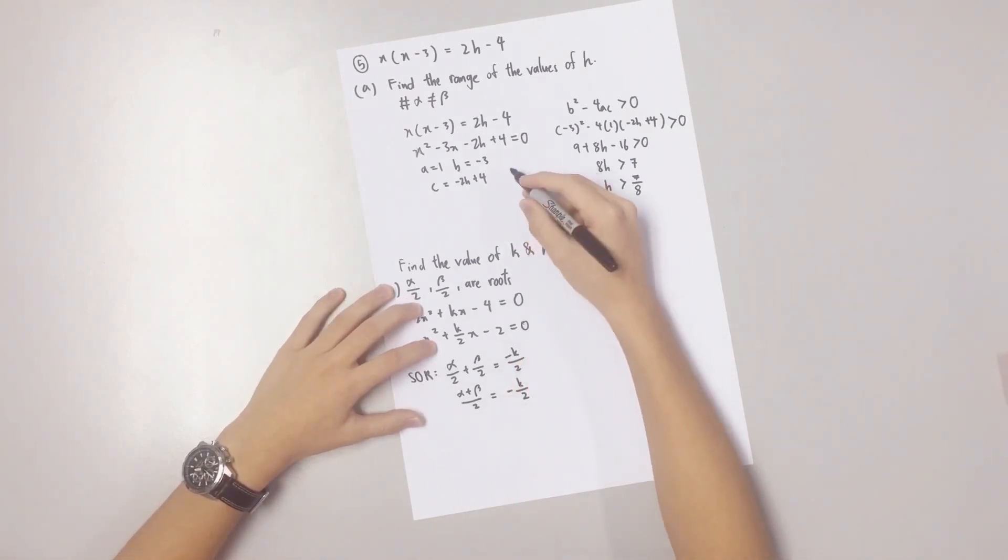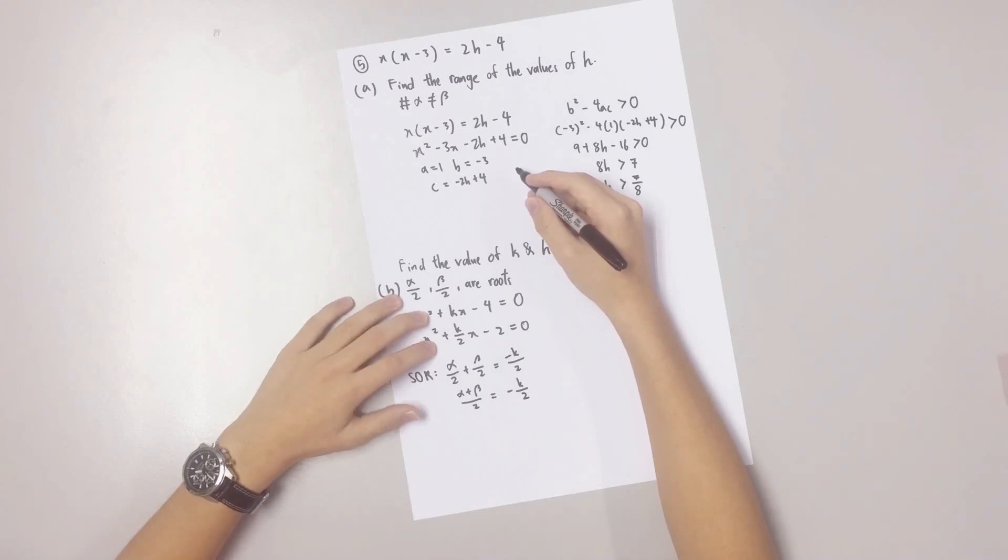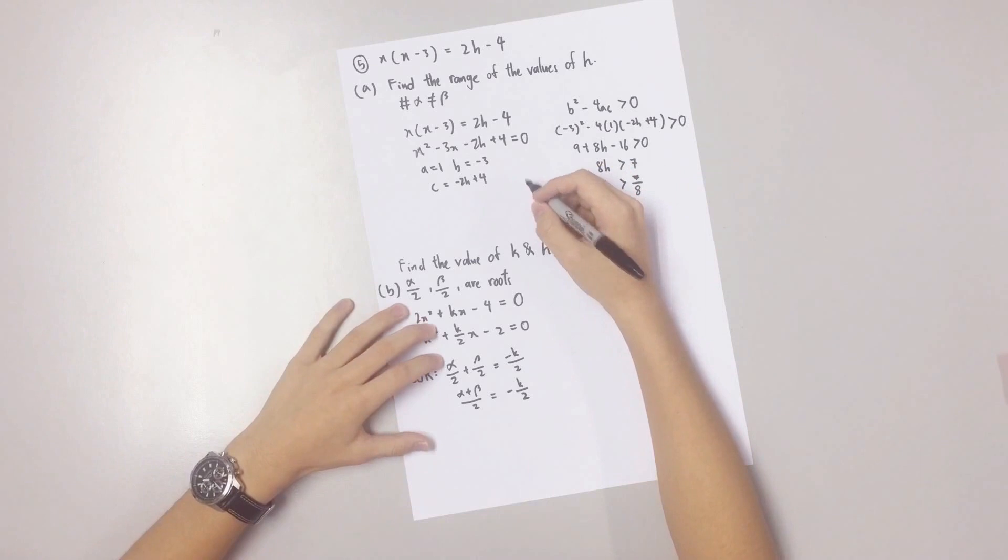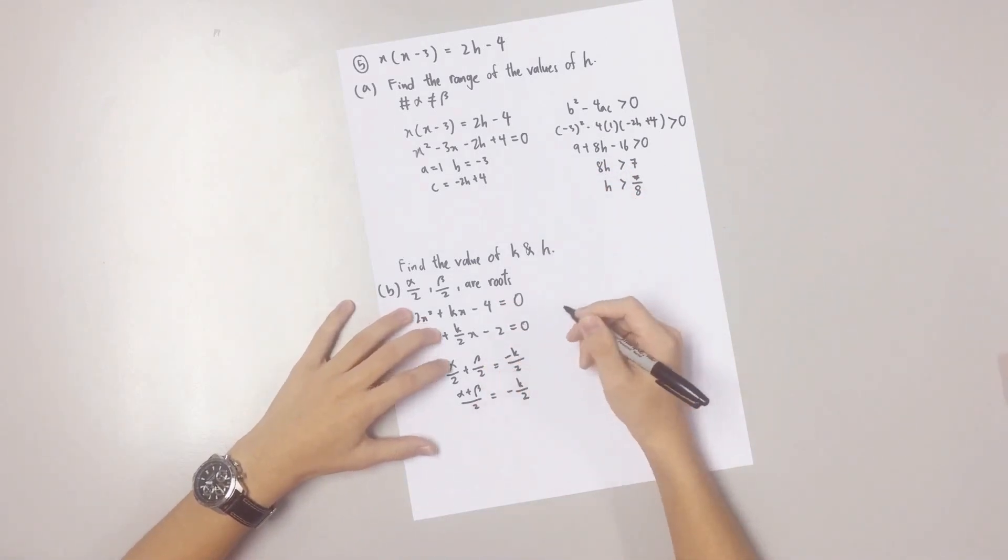Based on part A, we know that the sum of the roots alpha and beta is 3. So we substitute 3 into the equation and simplify it.